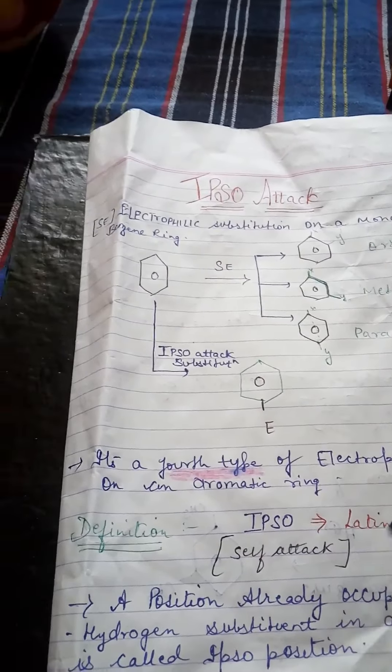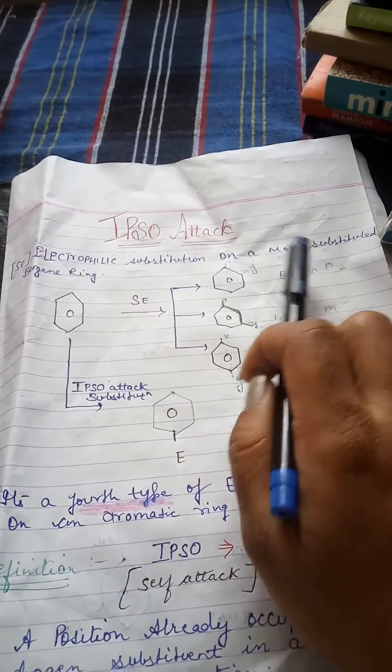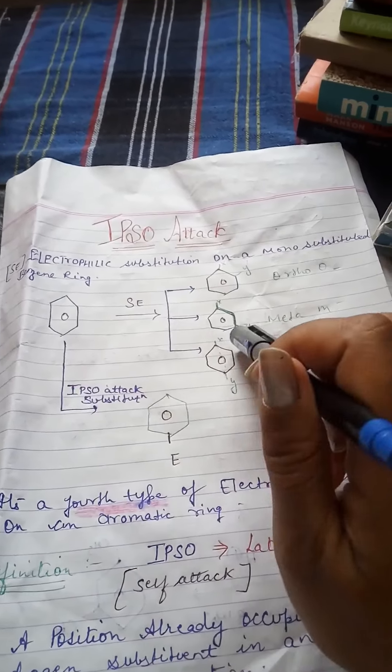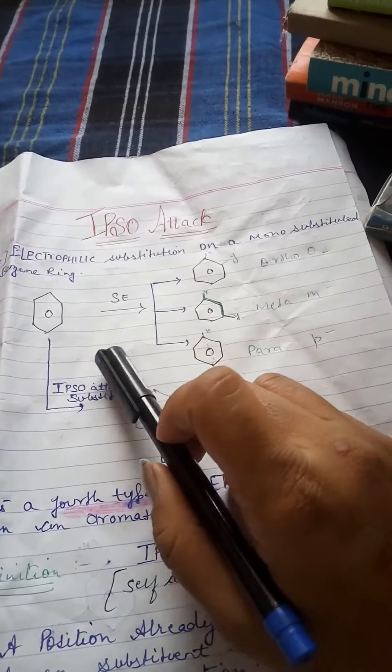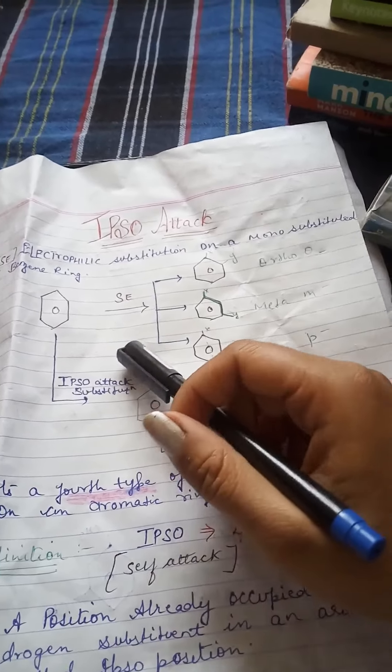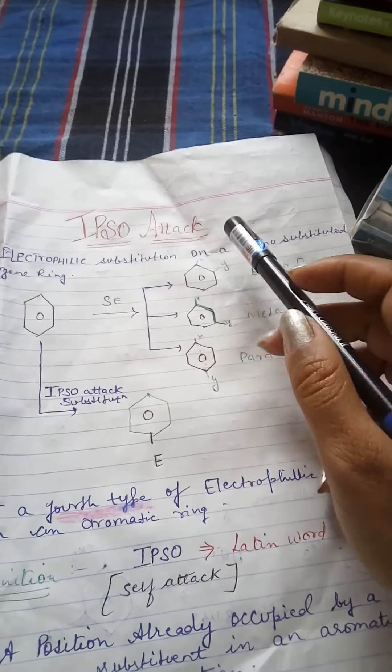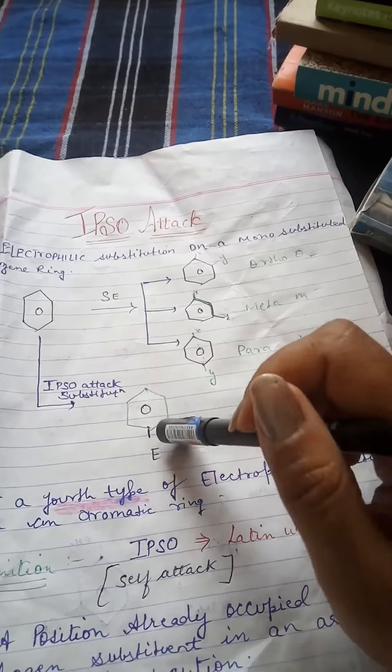So, in organic chemistry, electrophilic substitution on a mono-substituted benzene ring occurs by 4 types. You have 3 types. Then, let's revise it. Electrophilic substitution in organic compounds occurs by 4 types.